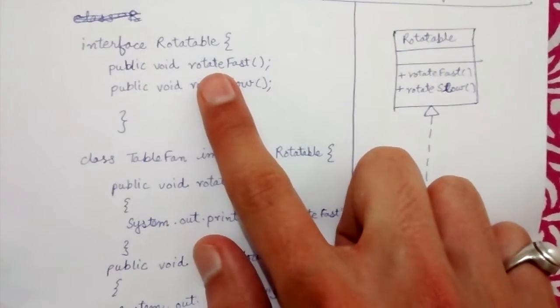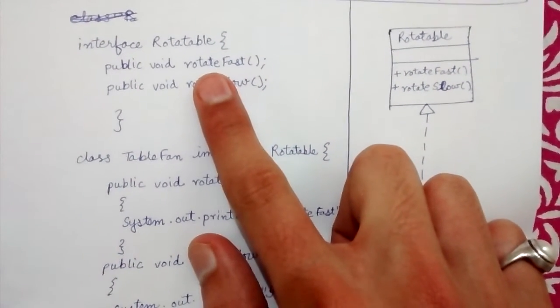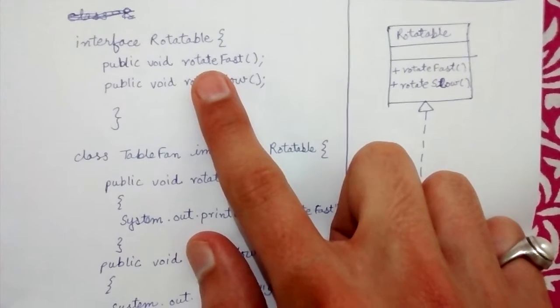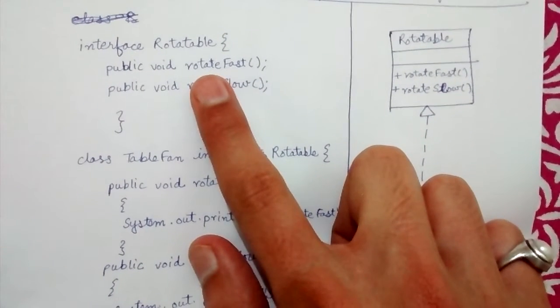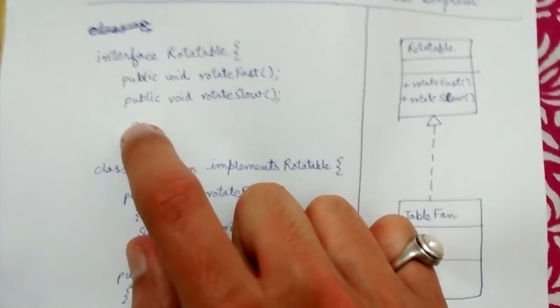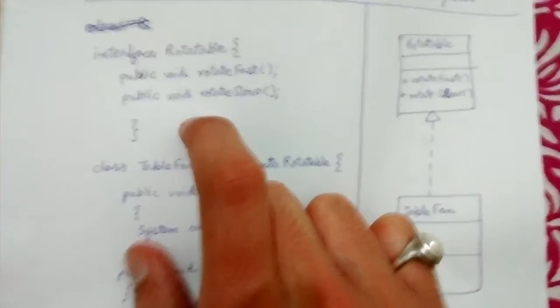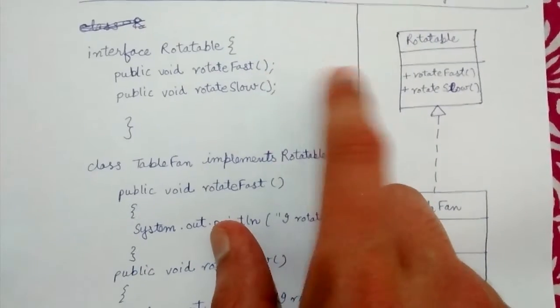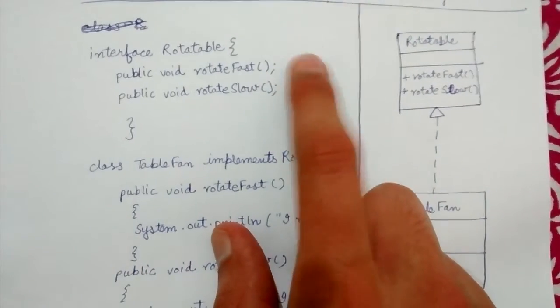Here we declare two methods in it: rotate fast and rotate slow. Both are having a public visibility and a void return type. These methods don't have any kind of definition.